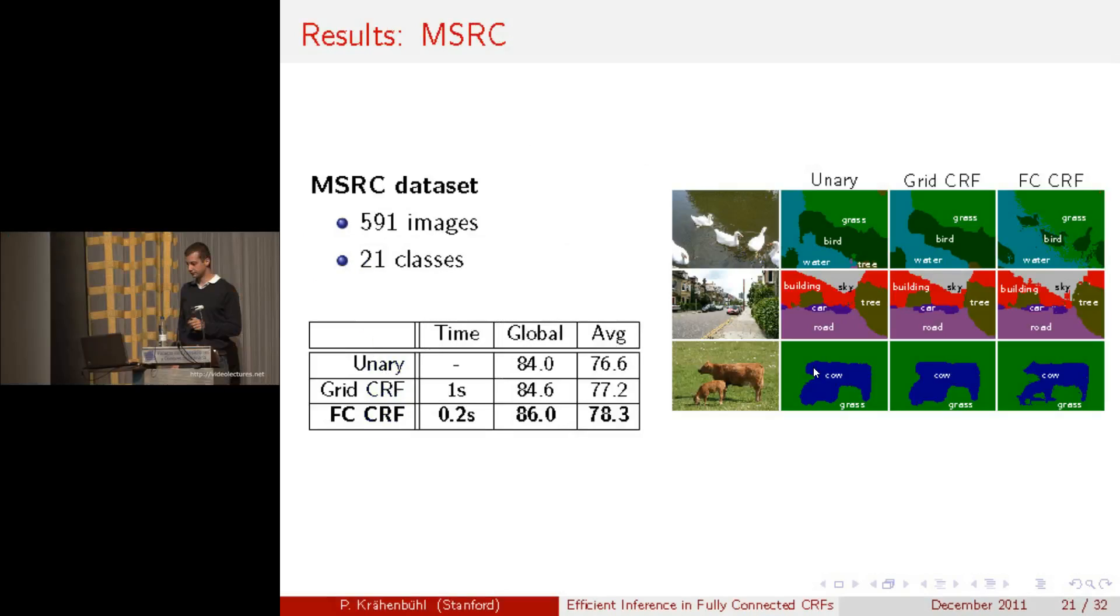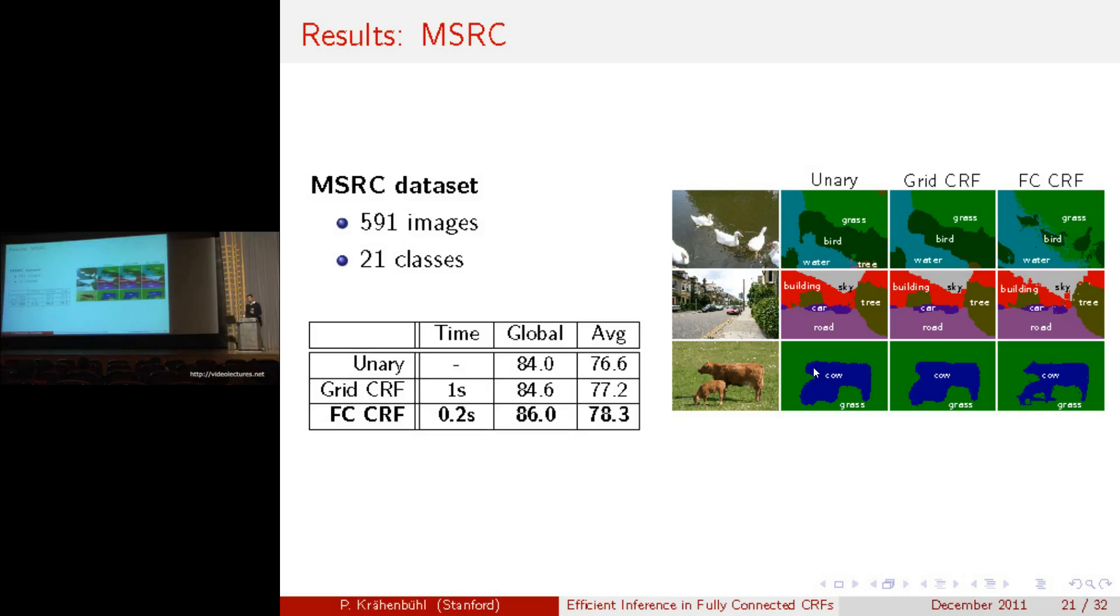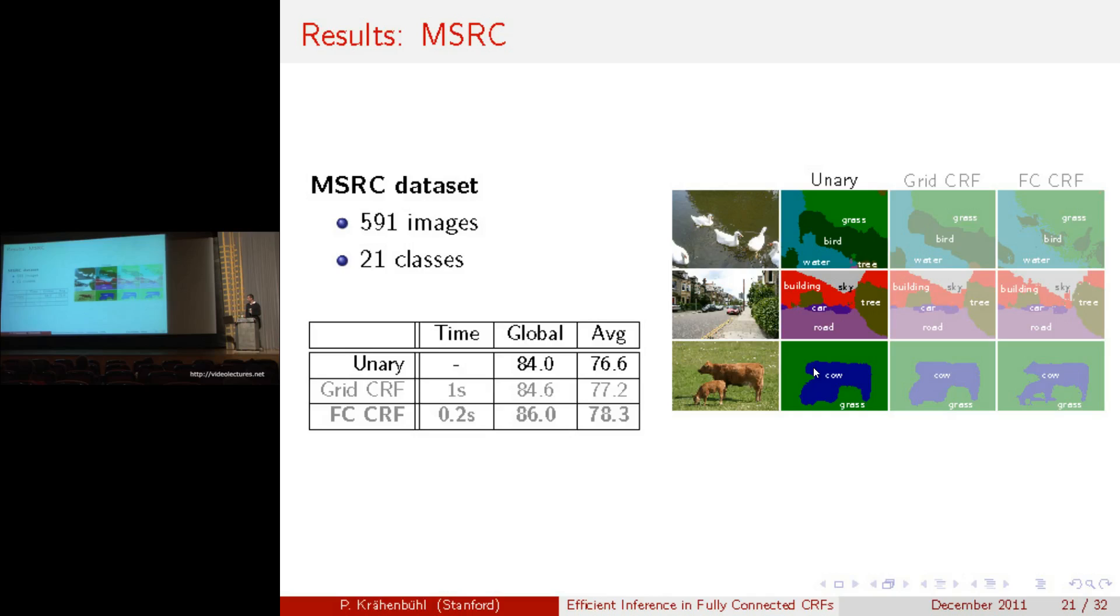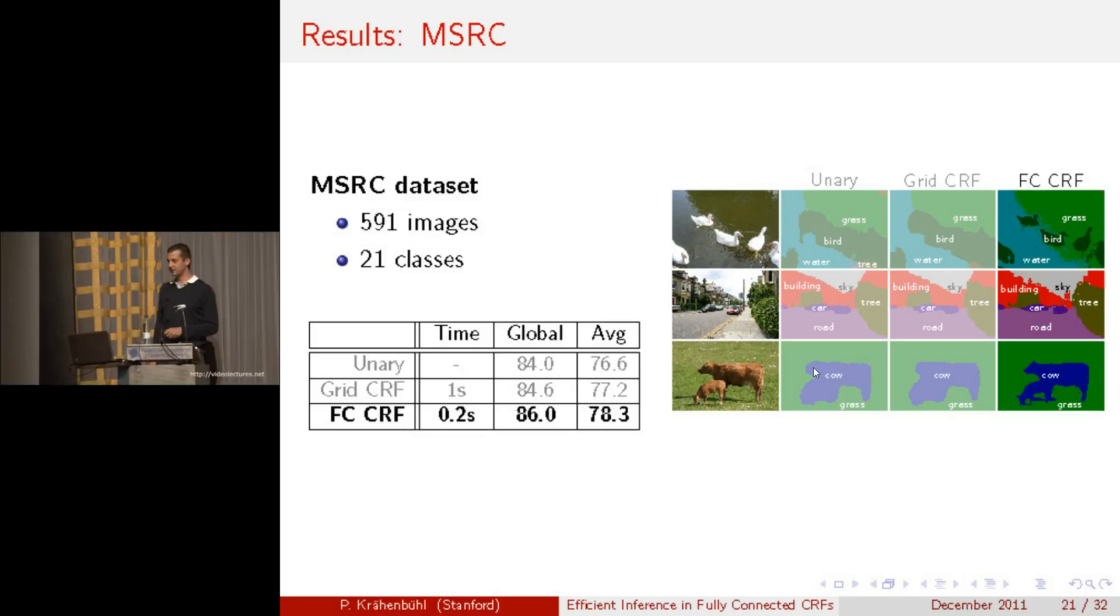Let's look at some results. We evaluated our algorithm on two standard datasets. The first one is the MSRC dataset, which contains almost 600 images and 21 object classes. In the MSRC dataset, the unary classifier, namely TextonBoost, already performs fairly well with an 84% accuracy. The grid CRF only improves slightly upon this accuracy, mainly by reducing some noise in the segmentation. If you look at the fully connected CRF model, it yields a three times higher improvement than the grid CRF, and the time required to do inference is roughly a factor of five lower.